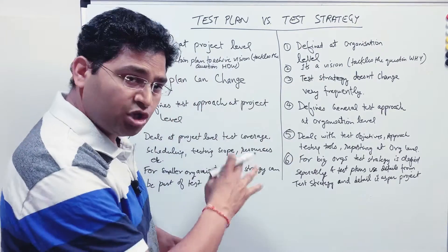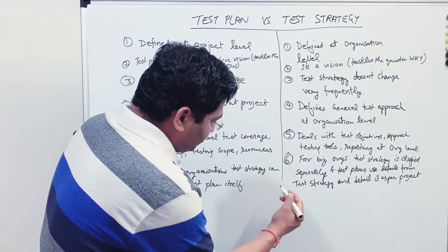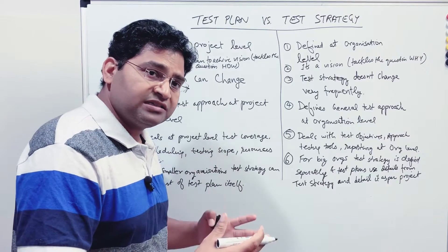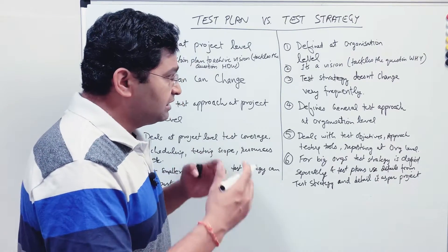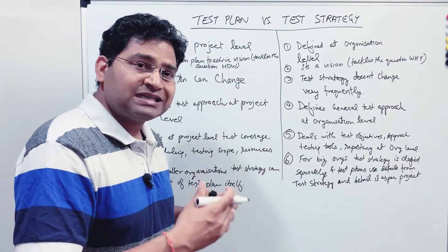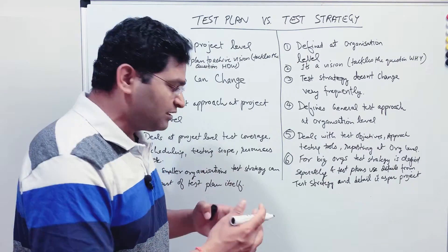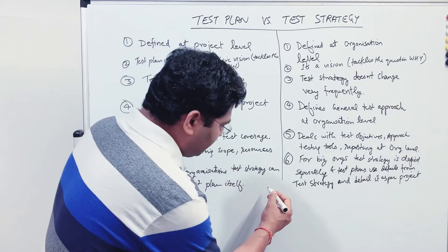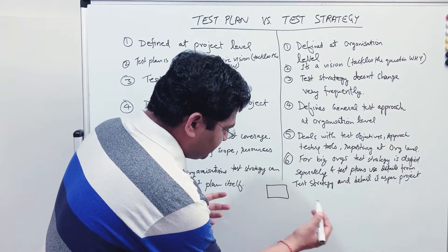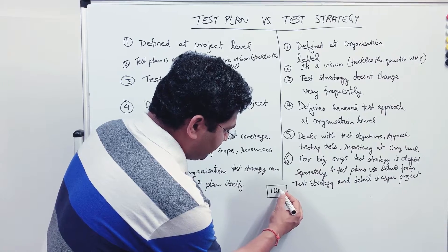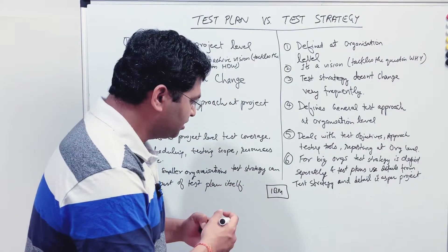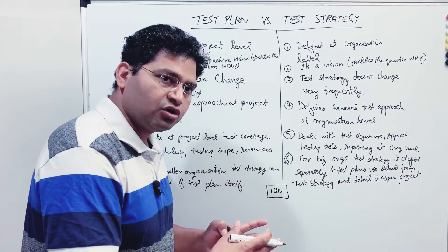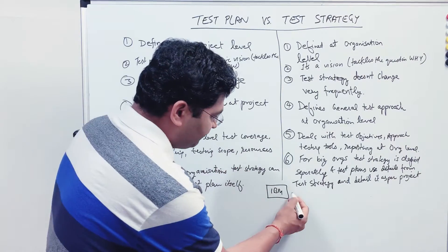When somebody asks about the test strategy, it is mostly defined at the organization level. The test strategy is a document defined at the org level. For example, hypothetically, I'll take IBM — IBM is a very big organization. When we talk about the test strategy document for an organization, it is defined at the org level.